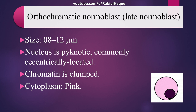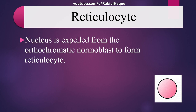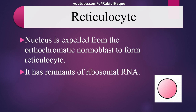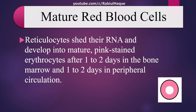The next stage is known as reticulocyte. The nucleus is expelled from the late normoblast to form this reticulocyte, but it will still have remnants of ribosomal RNA, giving it a polychromatic color. Ultimately, the last stage is the mature red blood cell: reticulocytes shed their RNA and develop into the mature pink-stained red blood cell after one to two days in the bone marrow and one to two days in the peripheral circulation.